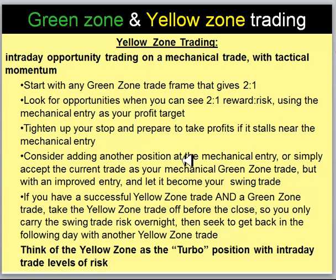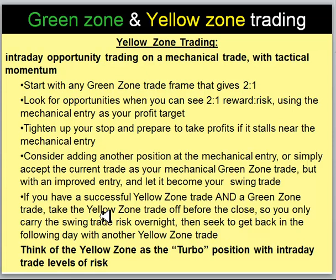But if it goes through that mechanical entry we can do a couple of things. We could consider adding another position, or we could simply say we're now into the mechanical green zone trade but we got an excellent entry, and then just let that carry on as our swing trade with money in hand already. Now if you yellow zone traded and also took the green zone entry, we want to take that yellow zone trade off before the close so that you only carry swing trade risk overnight. Then try to get back in the next day with another yellow zone trade if you can see tactical momentum and a 2-to-1 advantage.